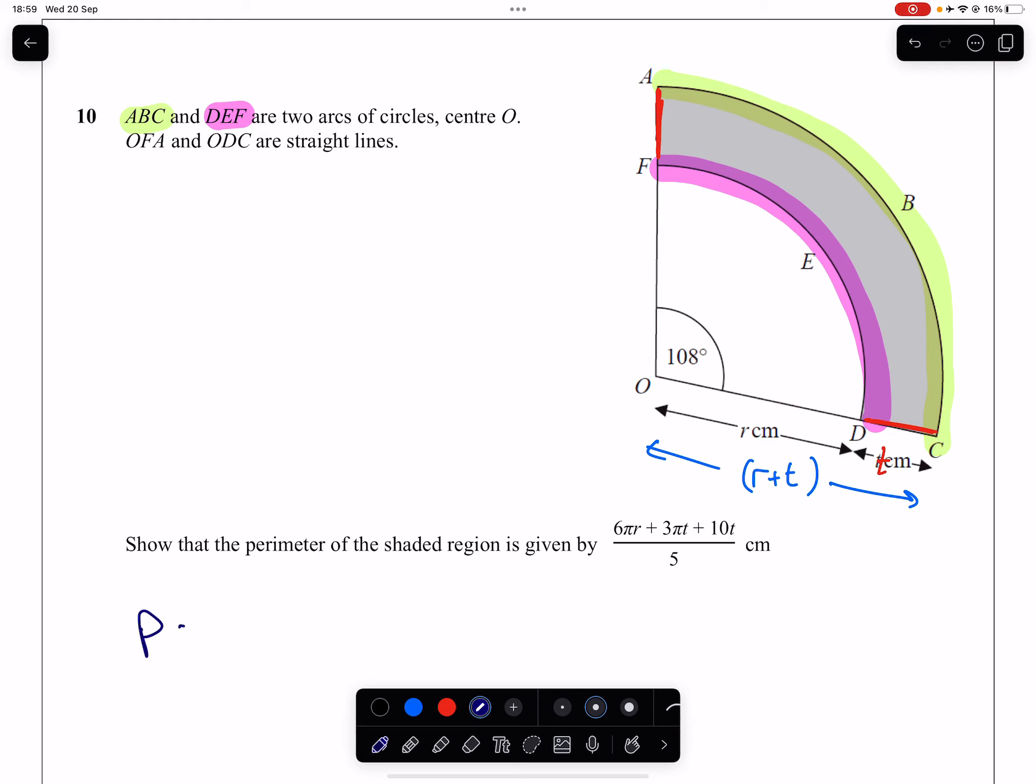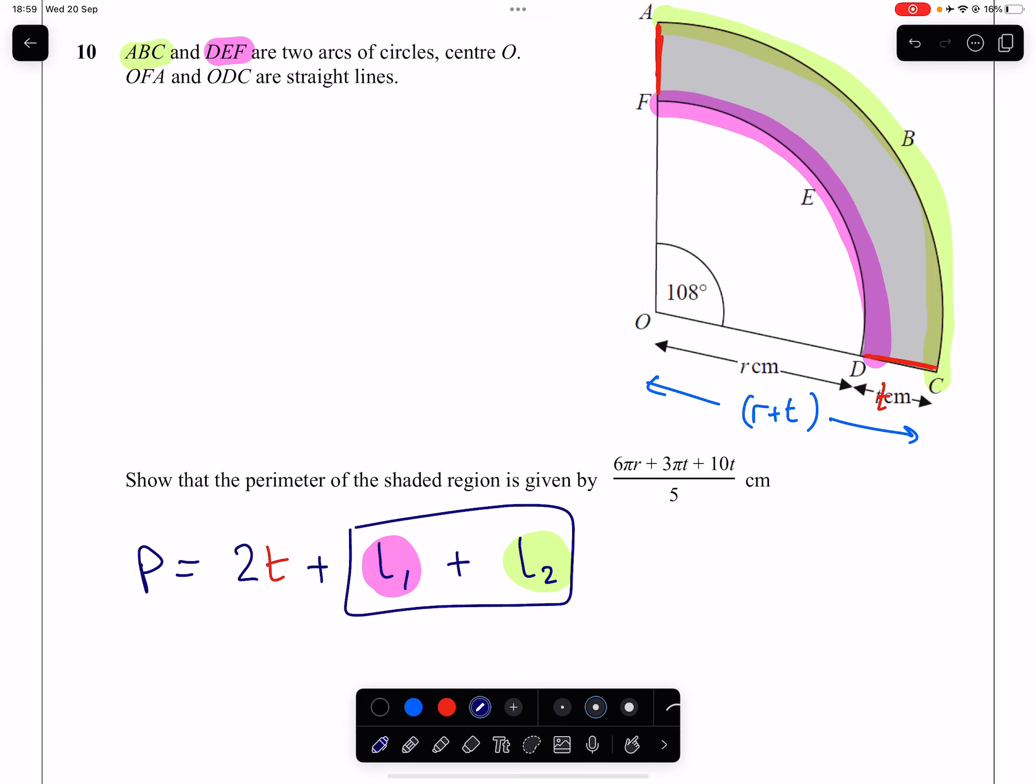So that means that our perimeter I could actually write out as the following. Two lots of T, two of them, plus our arc length 1 in pink and our arc length 2 in green, which I'm just going to color code here and call them L1 and L2. So if I find L1 and L2, sub them into this, I'm then going to eventually end up with the following.